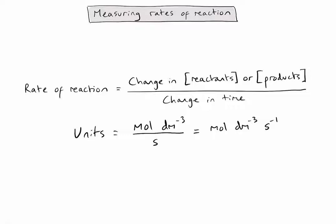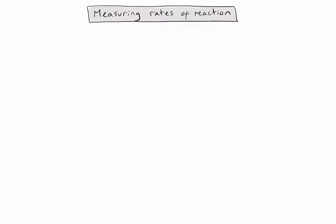So let's look at three simple approaches to indirectly measuring rate of reaction. The first example will be considering how we measure the change in mass during a chemical reaction.